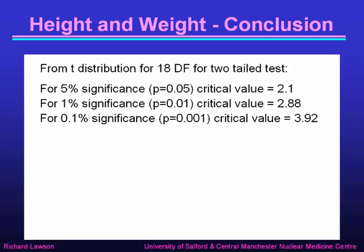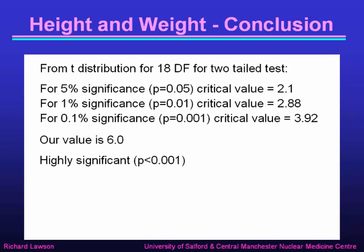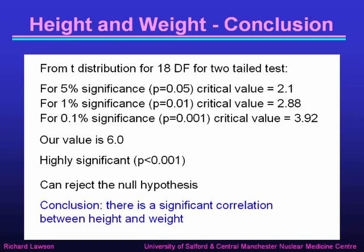Our t value was 6.0, which is greater than all of those critical values. So we have a highly significant result with a p-value of less than 0.001. We can definitely reject the null hypothesis and conclude that there must be a significant correlation between height and weight — because after rejecting the null hypothesis of no correlation, that is the only alternative left. So what we saw in the scatter plot is proved statistically.